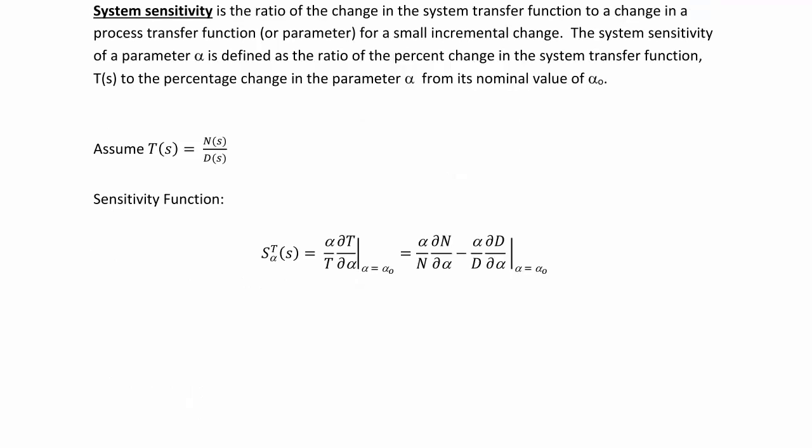System sensitivity is the ratio of the change in the system transfer function to a change in a process transfer function or parameter for a small incremental change. The system sensitivity of a parameter alpha is defined as the ratio of the percent change in the system transfer function T(s) to the percentage change in the parameter alpha from its nominal value of alpha naught.